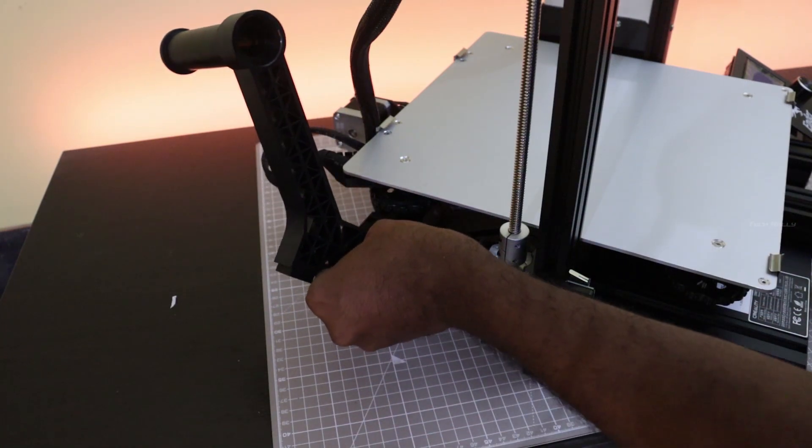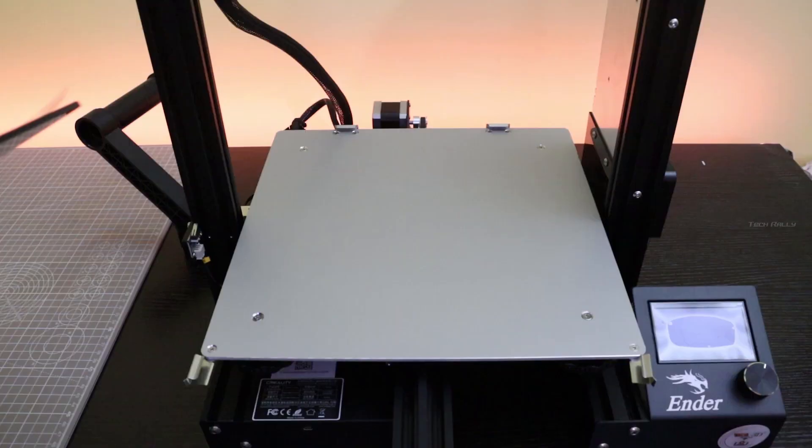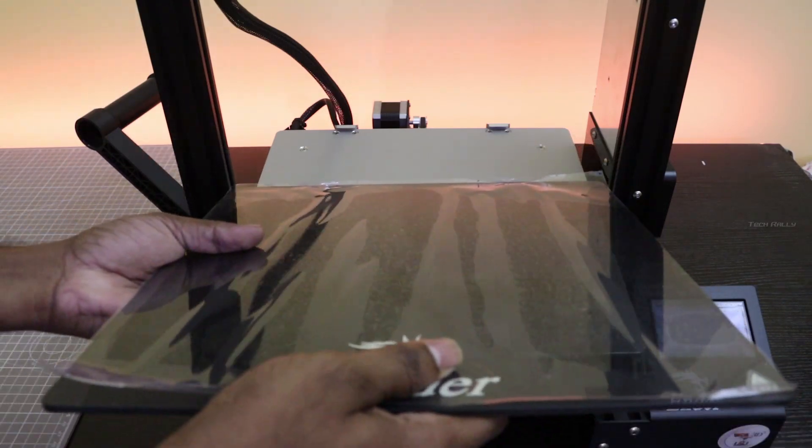Then I installed the filament spool holder just by sliding it into the aluminum profile, and then I installed the glass bed back to the printer.